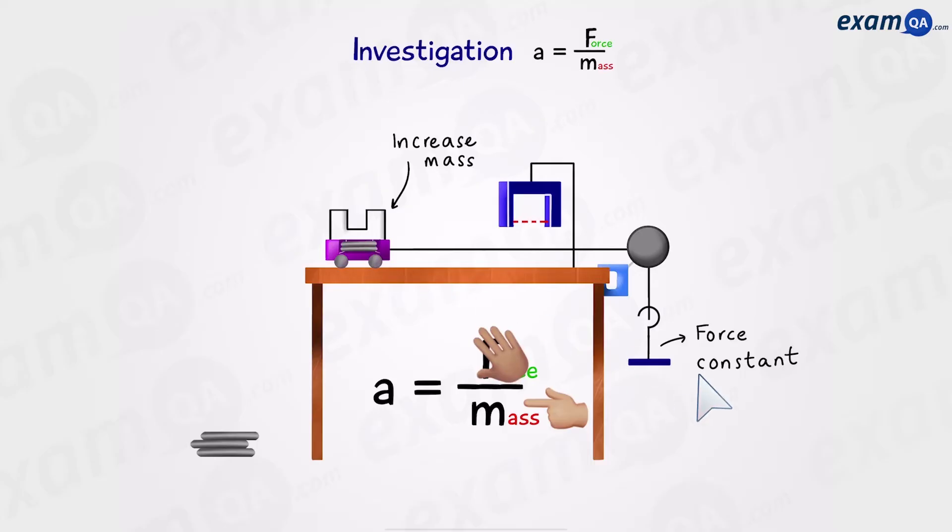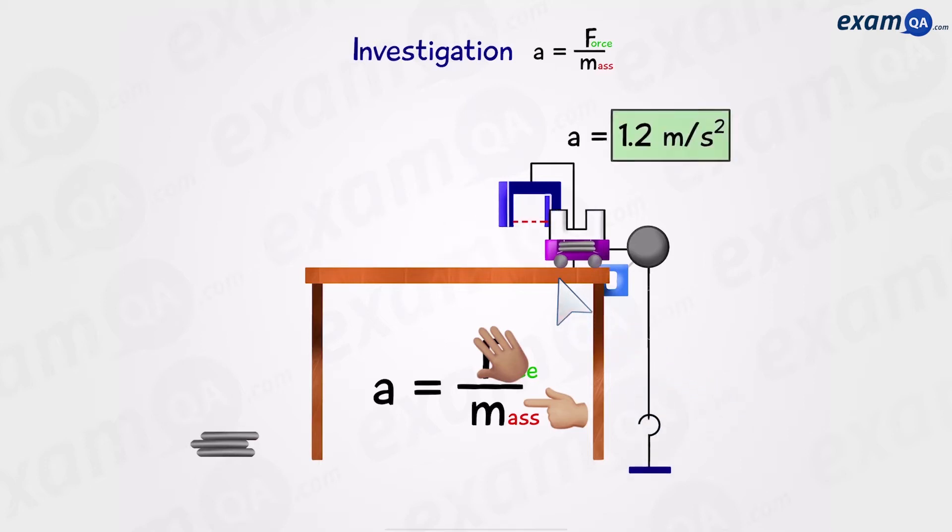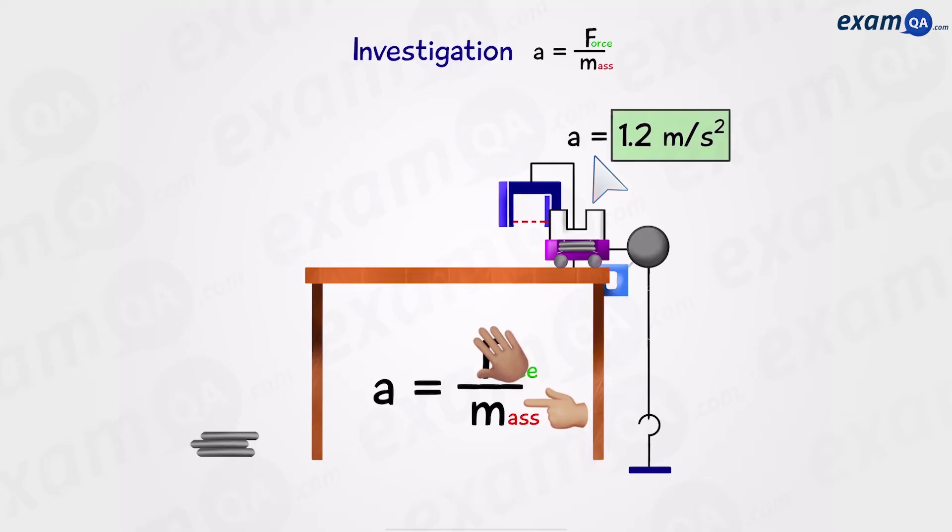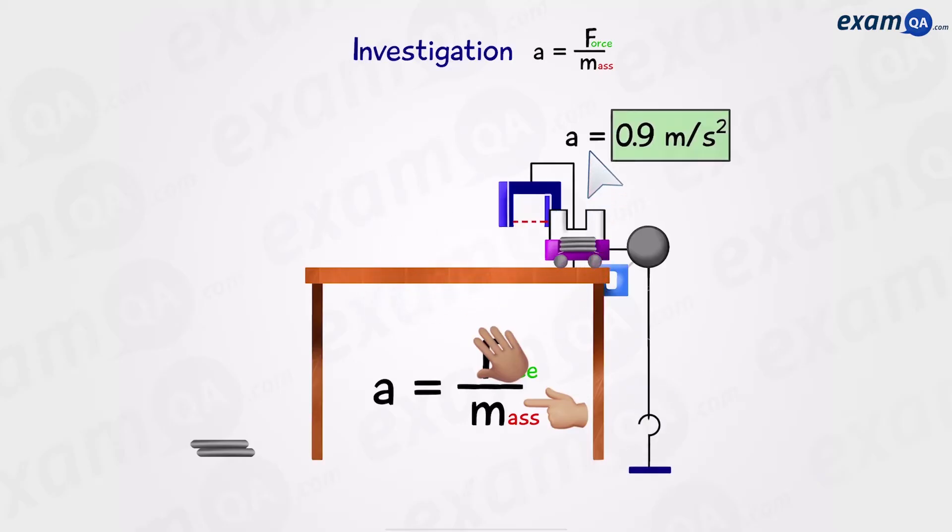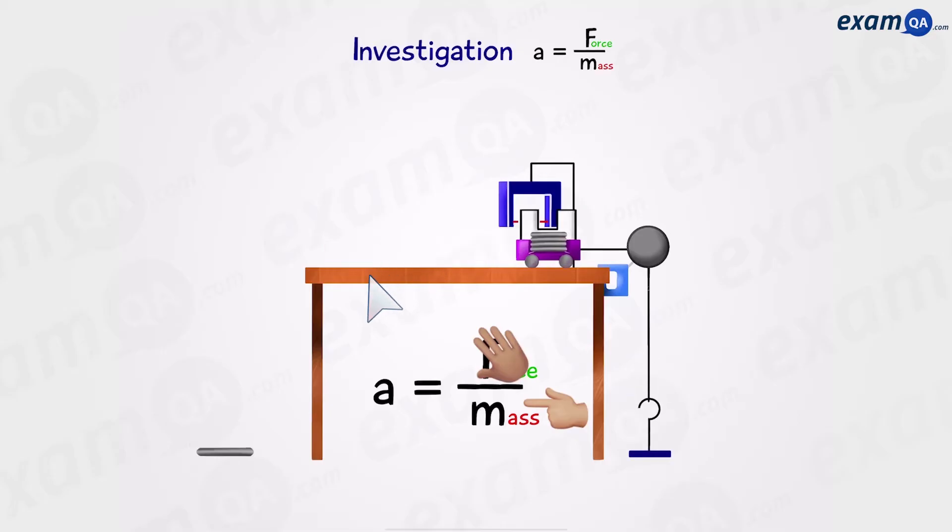Then we're going to put the trolley back to its starting position and place another mass on it. The force, however, will remain constant. We're not going to place anything here. Once again, we're going to run the experiment and the data logger will tell us the acceleration. Then restart, increase the mass, keep the force constant, and run the experiment. And again, we have acceleration. We keep on doing this until we've collected enough data for all the masses.